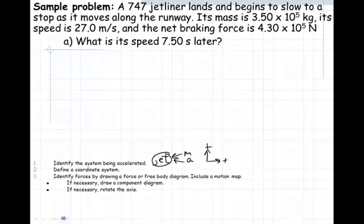We also want to identify the forces by drawing a force or free body diagram. If our jet is landing, the force diagram would include a normal force from the runway pushing up on the jet. The jet also has a weight or force due to gravity, and because it's slowing down, we know there is an applied force in the direction that's slowing it down.